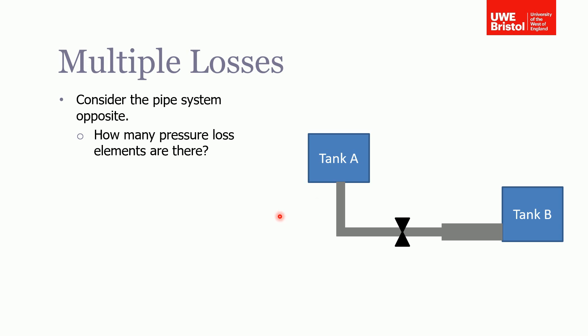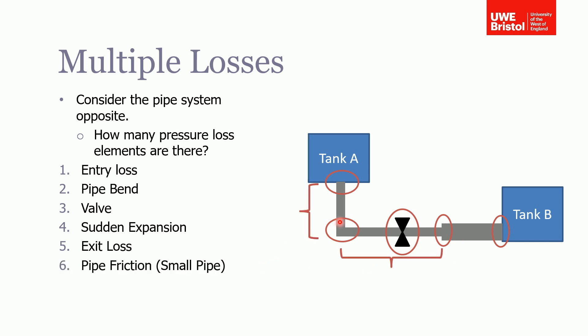So let's go through the pressure loss elements. Hopefully you got these. Firstly, there's the entry loss or entering the pipe—there's loss associated with that. There's also loss associated with the pipe bend, the valve, the sudden expansion, and then also the exit loss into the tank.